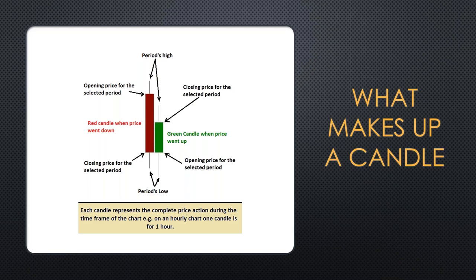The first thing we have to understand is what makes up a candlestick. Whether you're using a line chart, a bar chart, or a candlestick chart, each number is written in stone - it's indelible, it doesn't change, it's historical. So if we're looking at a one-hour time frame, the beginning of that hour is the open, and we put a line across on our charts for the open. The prices are the same across chart types; just the periods change.